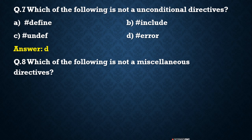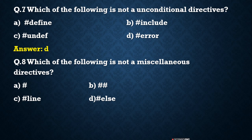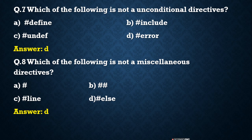Next question: Which of the following is NOT a miscellaneous directive? Options are: A) # (hash), B) ## (double hash), C) #line, and D) #else. We know that #else is a conditional directive, not a miscellaneous one. So the correct answer is D, #else, because it is not a miscellaneous directive.